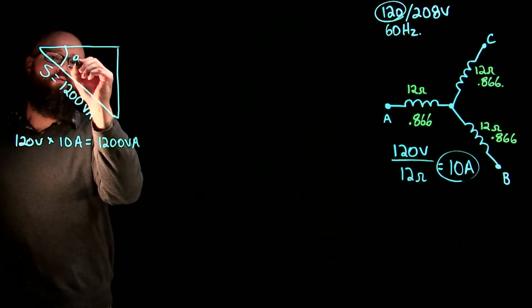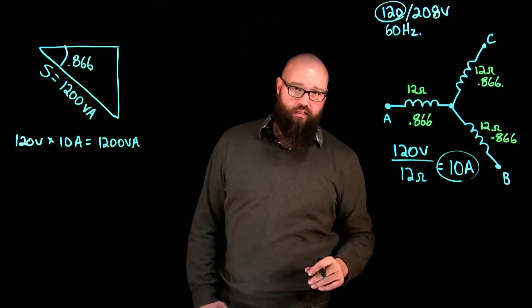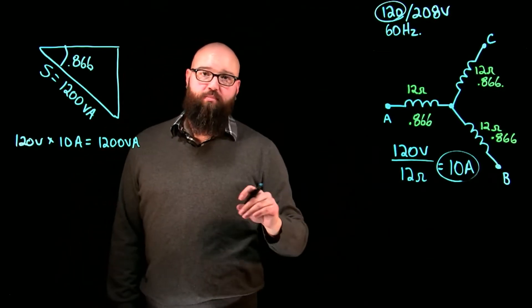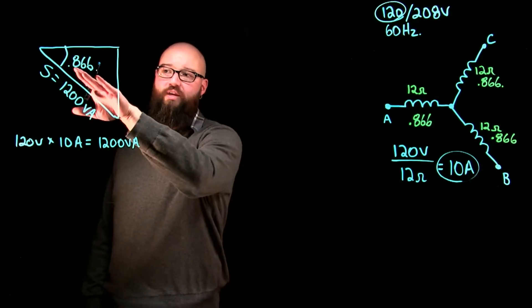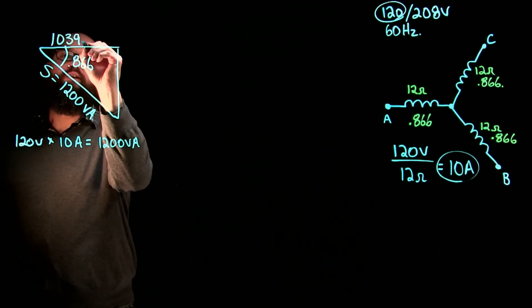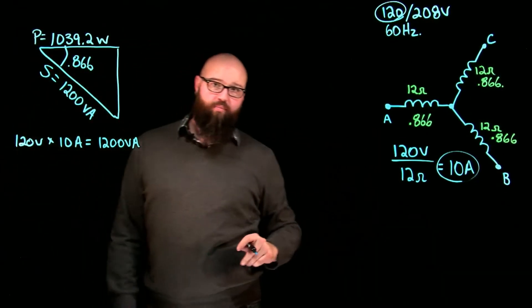I also know that each one of these loads has a power factor of 0.866. When I run the numbers, 1200 VA times the power factor or times the cosine of the angle which is 0.866 will give me a power of 1039.2 watts of power per phase.